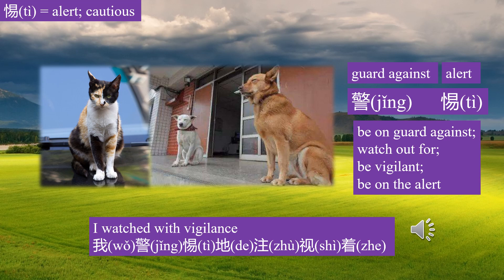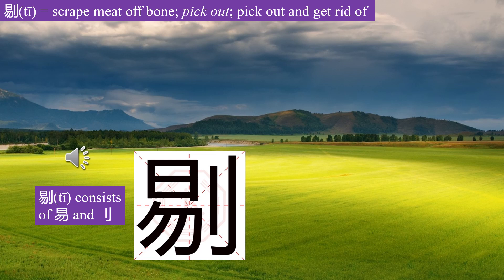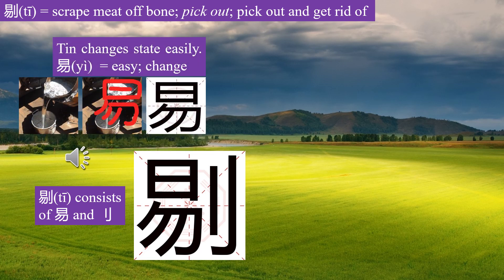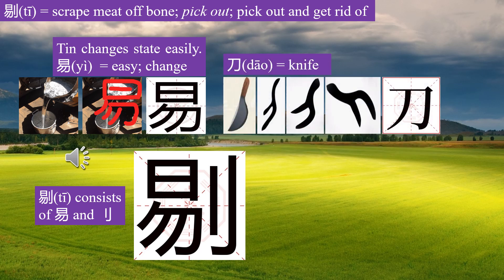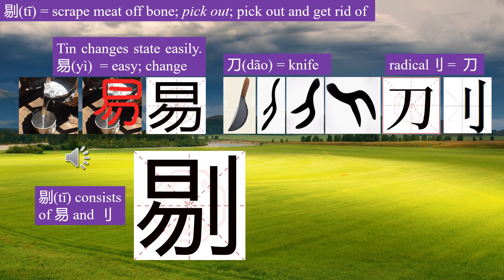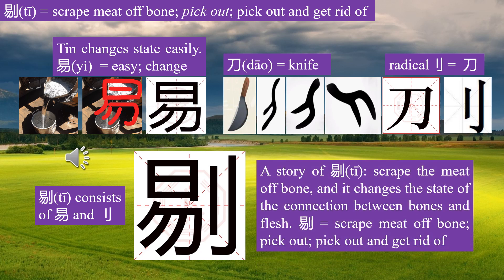The character 剔 (Ti) consists of two parts: Yi meaning easy/change, and the radical 刀 (Dao) meaning knife. A story of Ti: scrape the meat off bone, and it changes the state of the connection between the bones and flesh. Ti means scrape meat off bone, pick out, and get rid of.